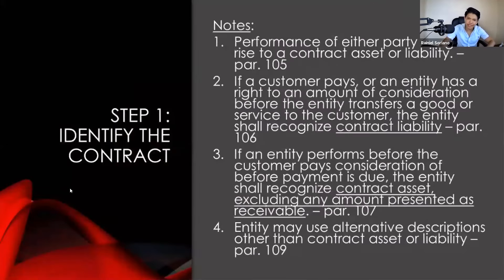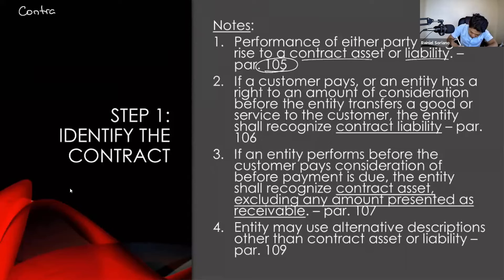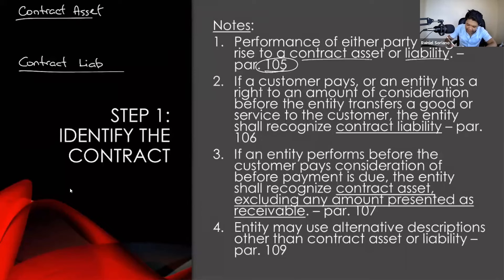Now let's look at the notes for step number one. According to paragraph number 105 of IFRS number 15, performance of either party will give rise to a contract asset or contract liability. The question is: when do we recognize a contract asset and when do we recognize a contract liability?